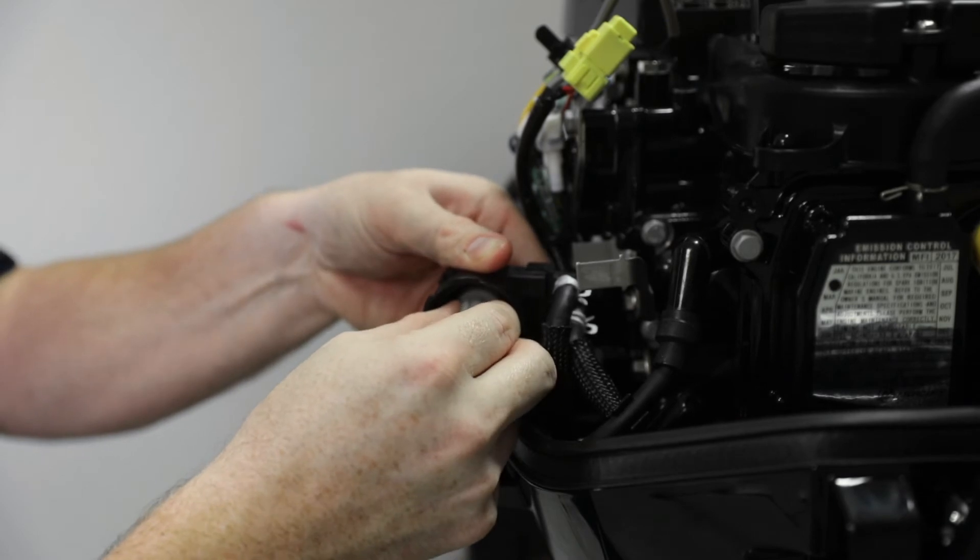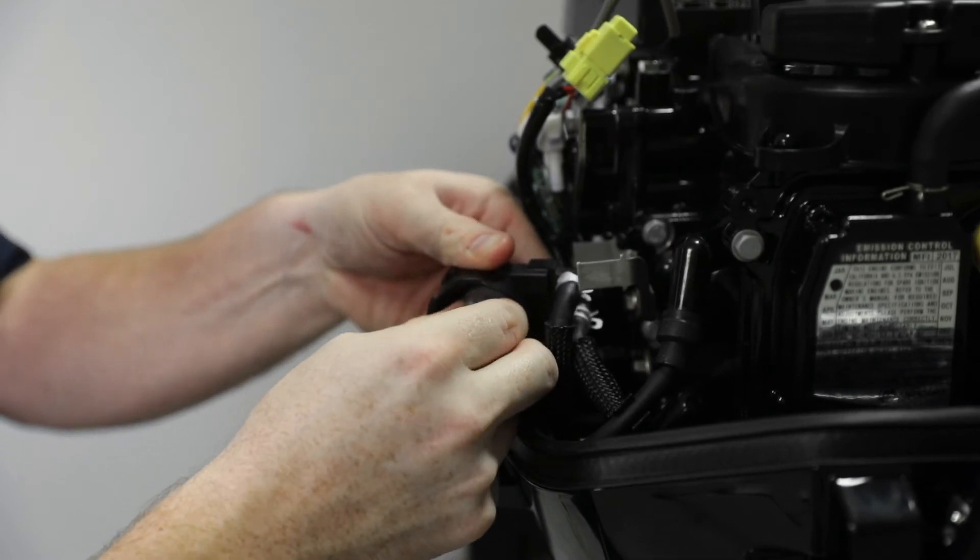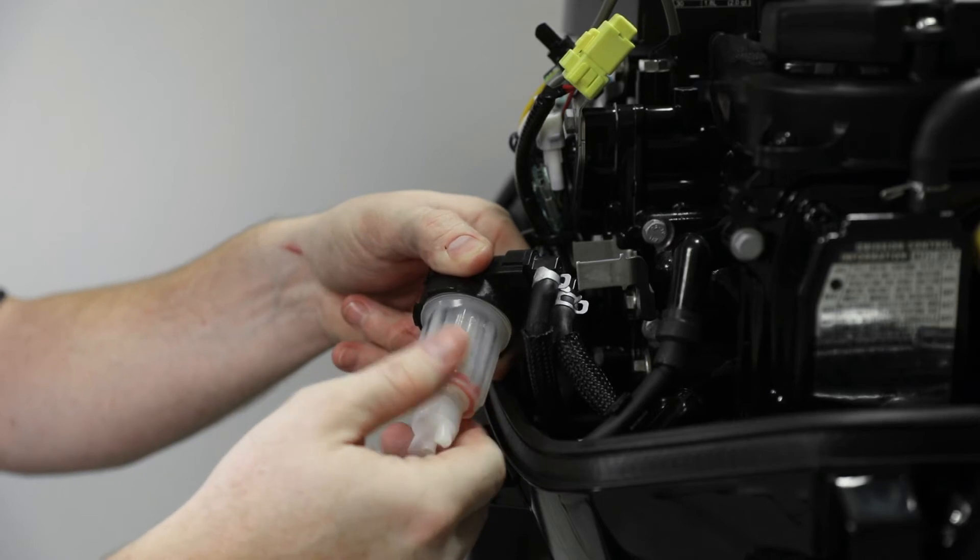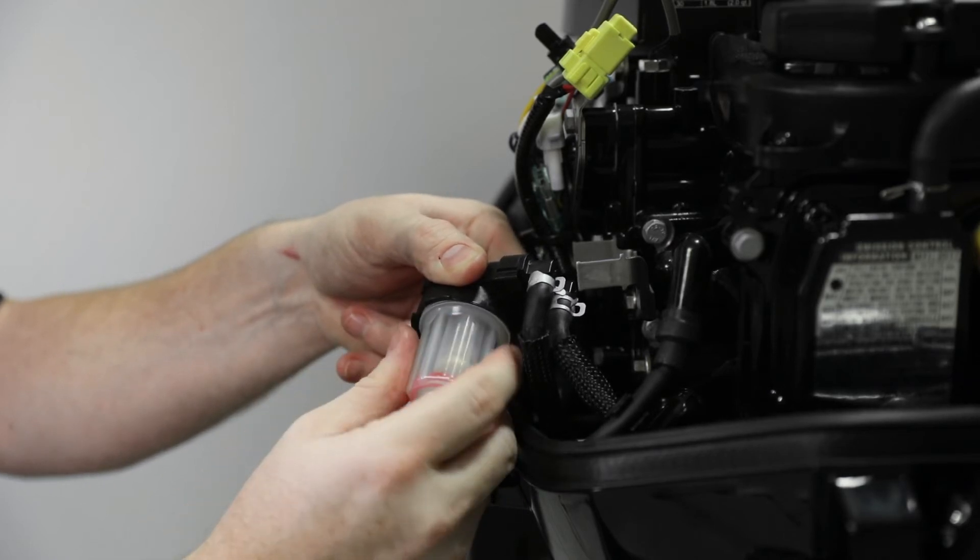Push the fuel filter element onto the filter housing. Install the sight bowl o-ring seal onto the sight bowl and place the red ring into the sight bowl. Install the sight bowl onto the filter housing hand tight.